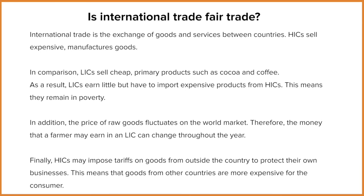So when an LIC sells its goods for export, it's getting less money than the HIC that's selling its goods for export. This creates an unleveled playing field, meaning that LICs remain in poverty because they can't produce at the same rate.